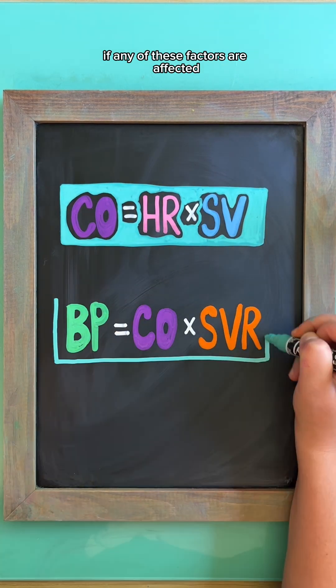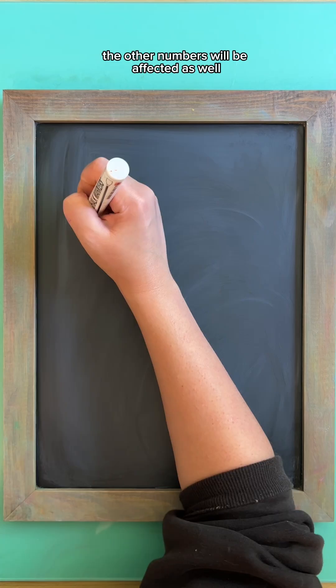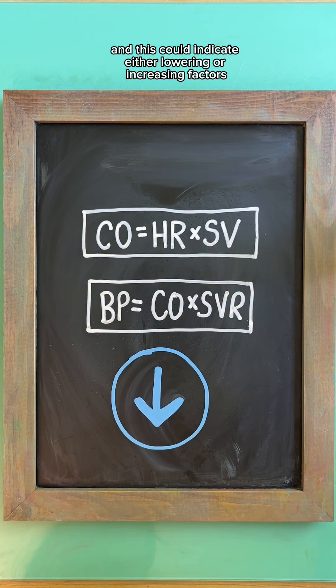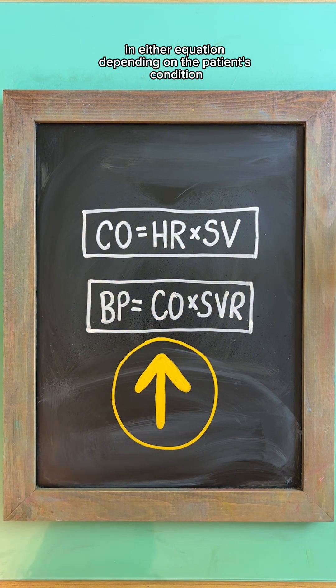If any of these factors are affected, the other numbers will be affected as well. The purpose of cardiac meds is to optimize cardiac functioning, and this could indicate either lowering or increasing factors in either equation depending on the patient's condition.